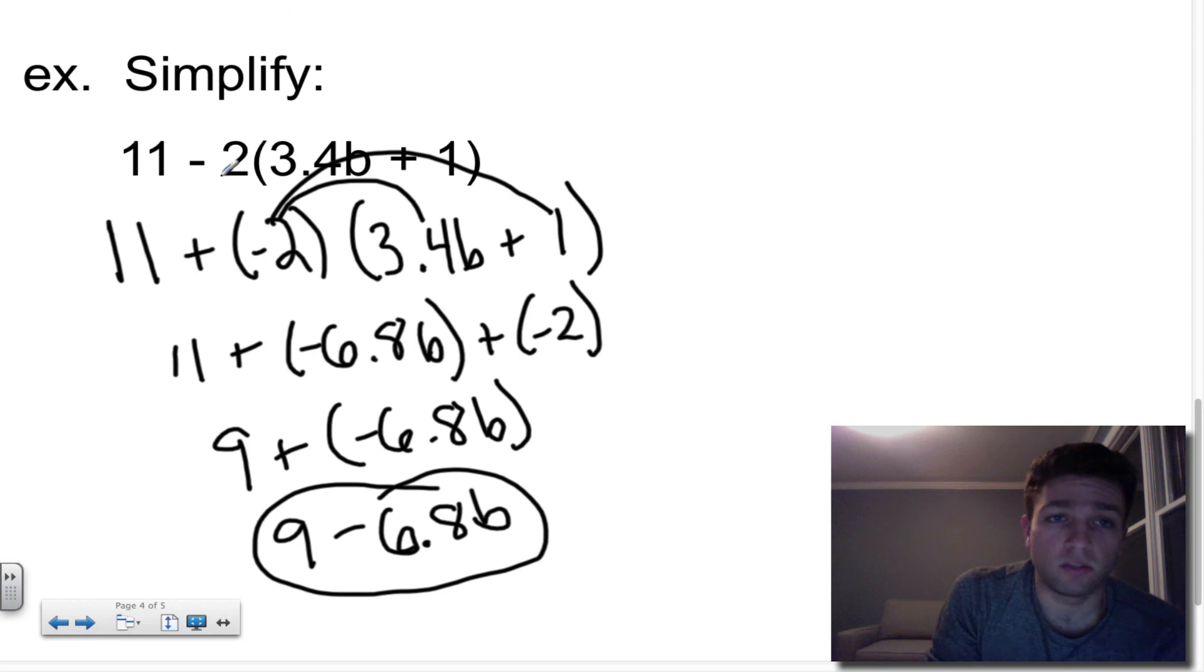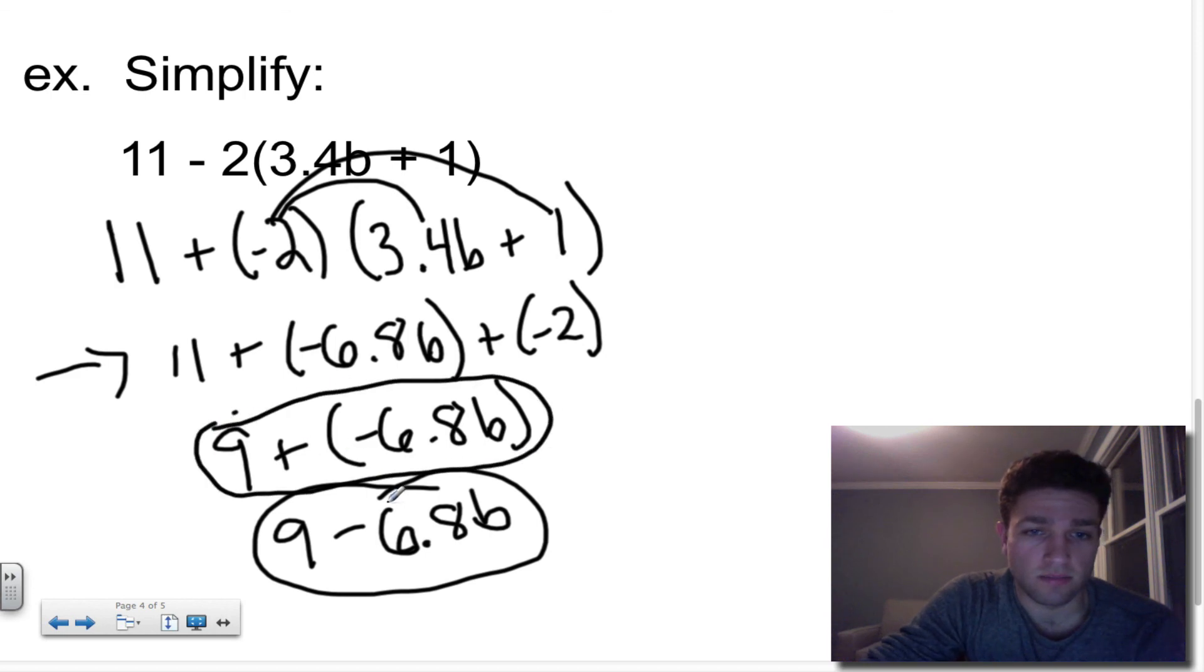And there would be your final answer. And all I did was I distributed, which you've worked with distributive property before. This is just a friendly reminder that when you are working with subtraction in the distributive property, you're really distributing a negative number into the problem. So make sure that you either rewrite this as addition of a negative number or you're just very careful. And then, of course, here is where I combined my like terms and I simplified my expression.